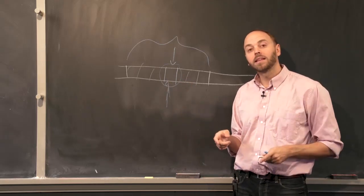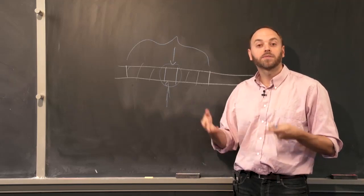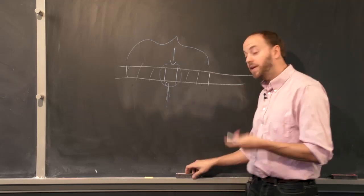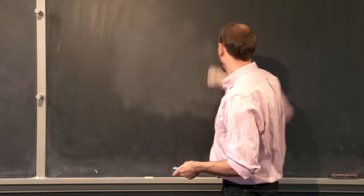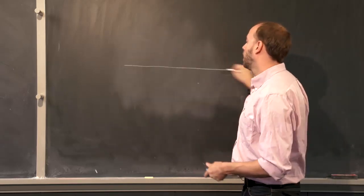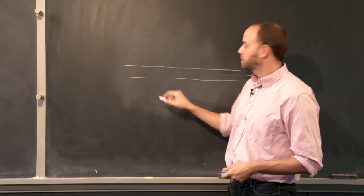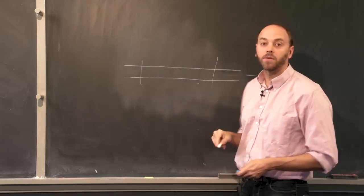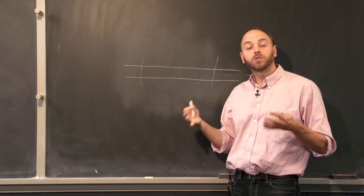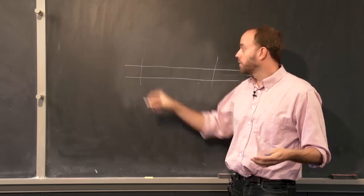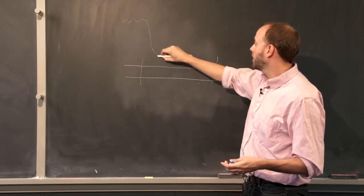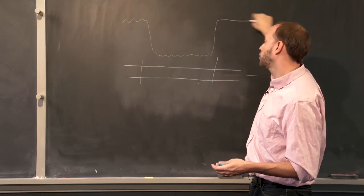And this is a key that allows us to identify events of recent selection. Because what we can look for in the genome is areas that are less variable than we'd expect. So if we imagine this block right here, we expect a certain degree of background variation in the genome.